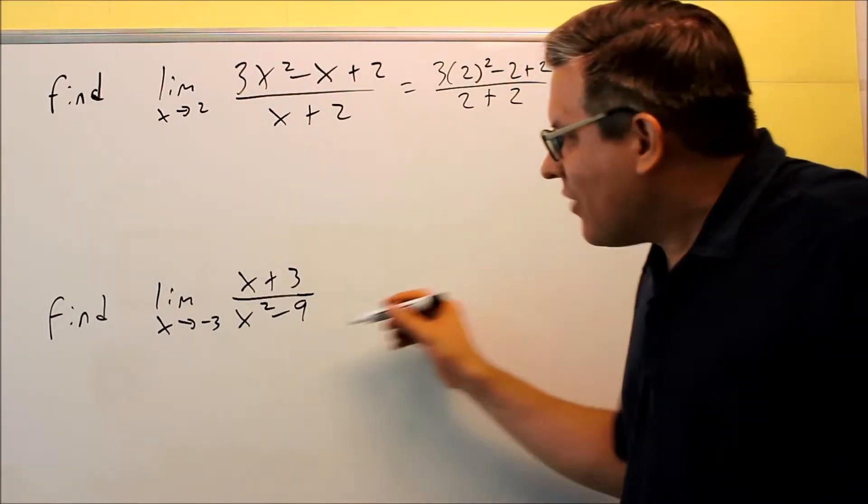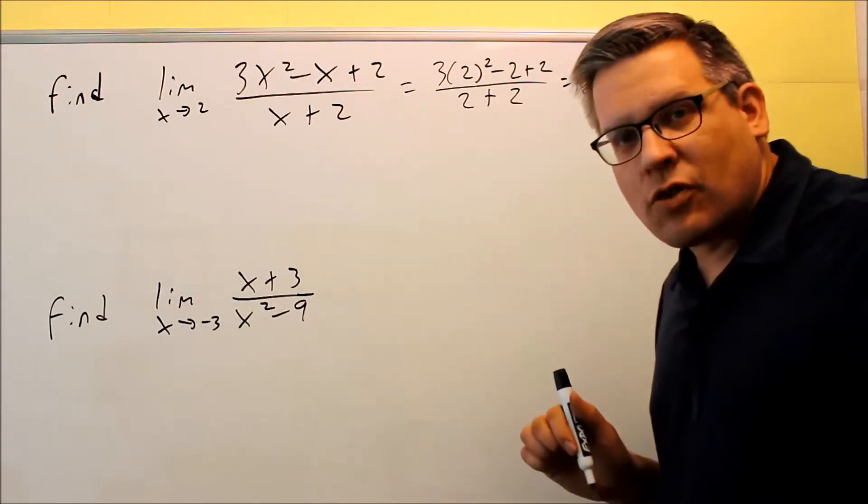Now before I conclude that the whole limit is going to be undefined, I need to first use some algebraic manipulation to see if I can cancel something and be able to get an exact answer. So you're always going to try some procedures on these first, instead of just concluding automatically that it doesn't exist.